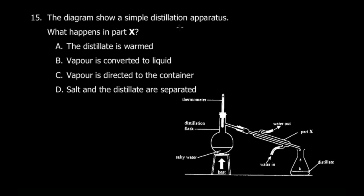Let's quickly move to question 15. The diagram shows a simple distillation apparatus. What happens in part X, this part here? This is a simple setup: you heat salty water, vapor comes through, and then the water comes out. At part X, what you want to do - the reason you're putting in water is such that you can collect whatever is coming out of here as a liquid.